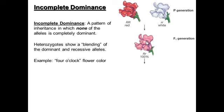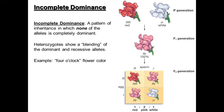If you self-fertilize the pink flower, the genotypic ratio is exactly the same as in Mendelian genetics — one to two to one. However, the phenotypic ratio is also one to two to one, rather than the three-to-one we see in Mendelian genetics. In incomplete dominance we have three phenotypes, and the heterozygous individual always shows that blended, pink phenotype.